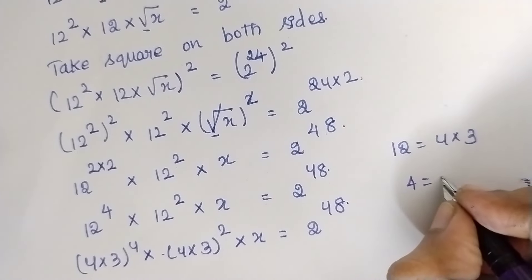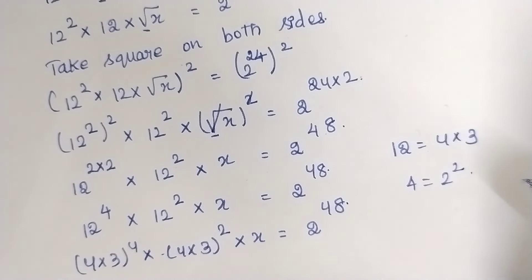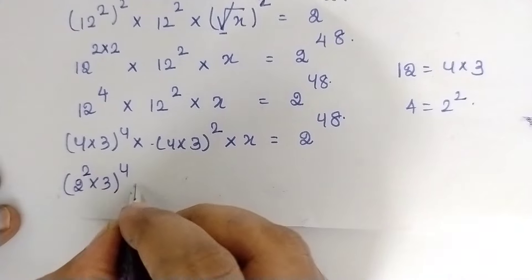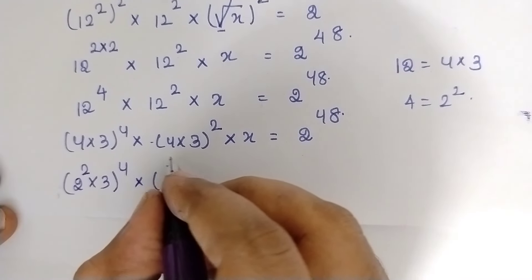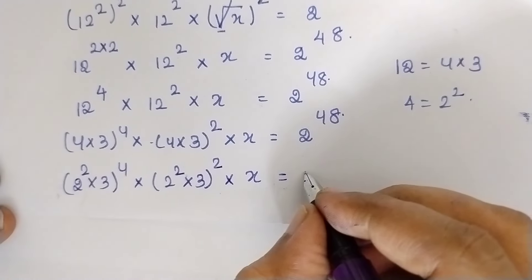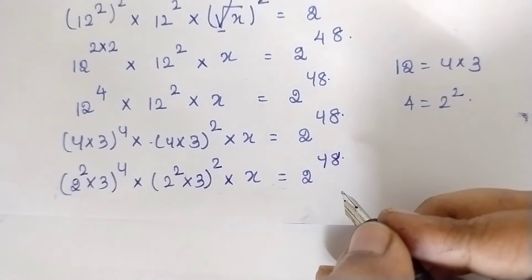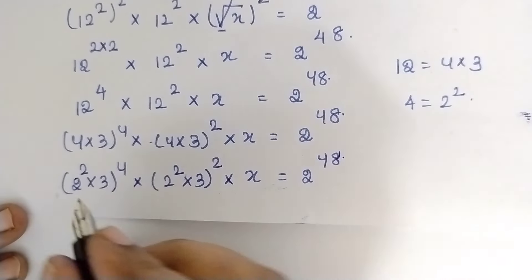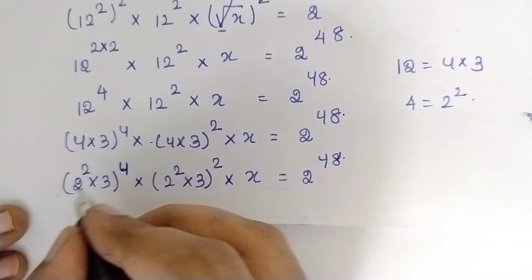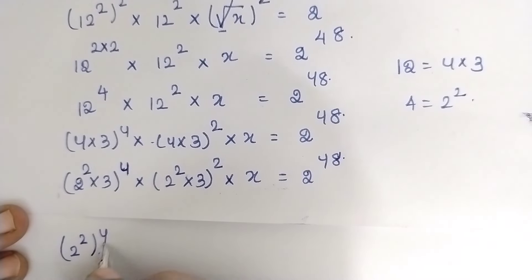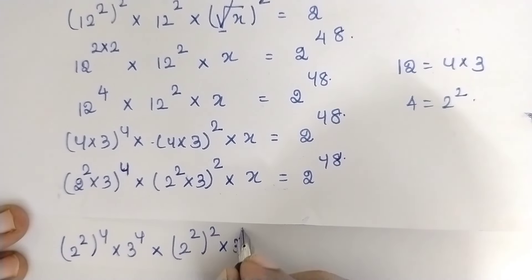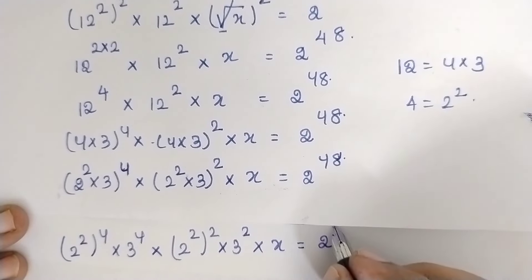So (2²×3)^4 multiplied by (2²×3)² multiplied by x, which is equal to 2^48. Splitting and writing the powers individually: (2²)^4 multiplied by 3^4, multiplied by (2²)² multiplied by 3², multiplied by x, which is equal to 2^48.